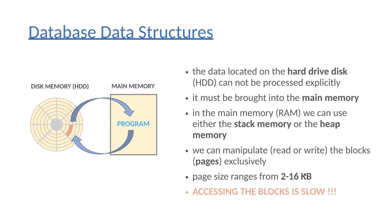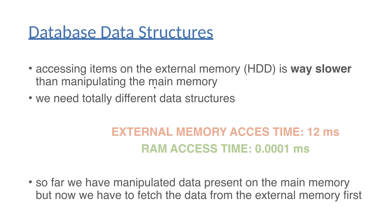Accessing blocks on external memory is way slower than manipulating main memory. Accessing items on external memory takes approximately 12 milliseconds, while accessing the main memory — the RAM — takes only 0.0001 milliseconds. As you can see, there's a significant difference as far as access times are concerned.